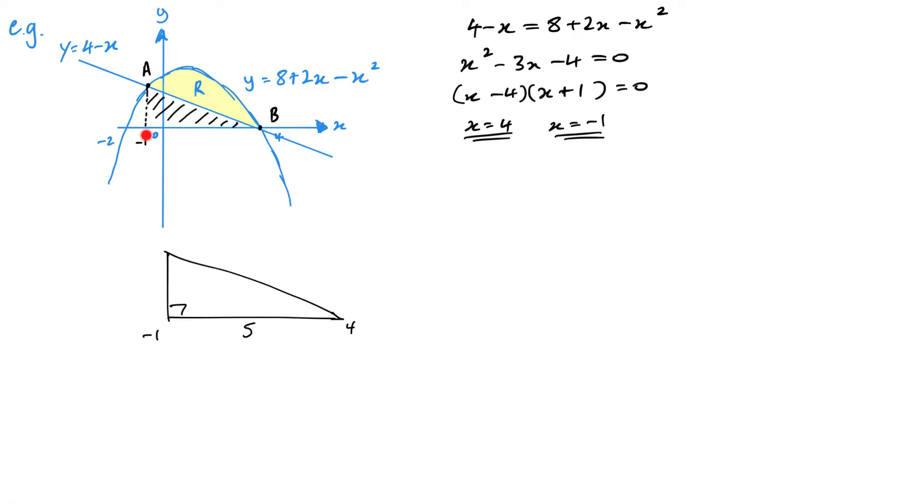So all I need to do is substitute my x equals minus 1 into either equation. But obviously, this one's the easiest one. 4 minus minus 1 is going to give me 5. So this is going to be a height of 5. So this coordinate is minus 1, 5, therefore A. We know it's a distance of 5 along the horizontal as well, because we're going from minus 1 to 4. So nice and easy, we've got an area here then of 25 over 2. Base times height divided by 2.